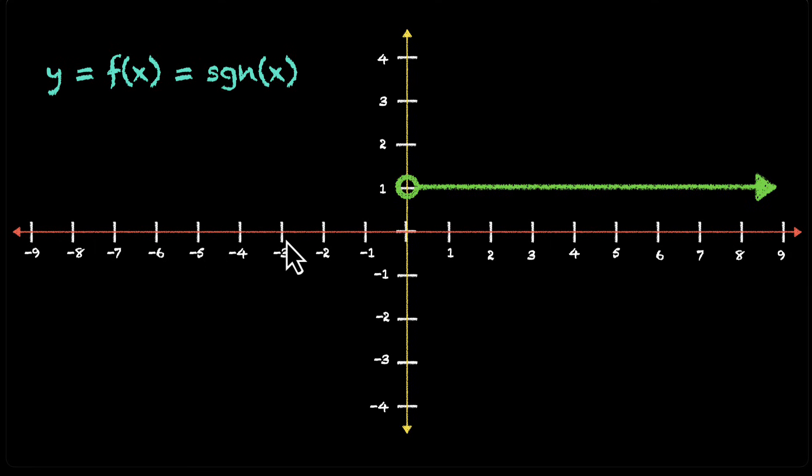What about the negative values? Whatever negative value you pick, the output will always be minus 1. So this also behaves like a constant function here. This is what you'll get. What about 0? For 0, you get 0. So this function has these three parts, green light, red light, and yellow light.